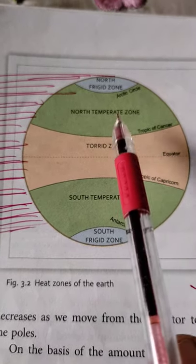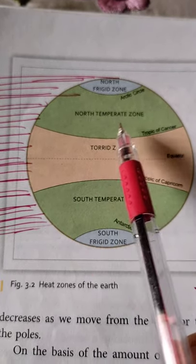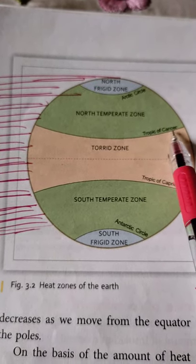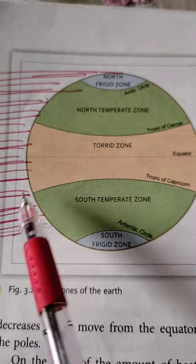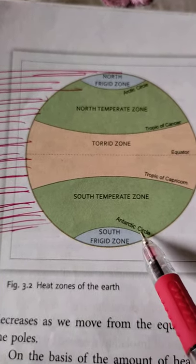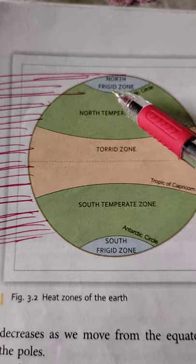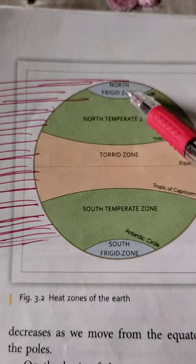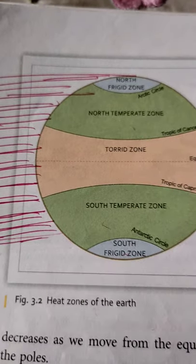Once we move towards the north or south, we are having the temperate zone — the south temperate zone and the north temperate zone. The line in the northern hemisphere is known as the Tropic of Cancer, and in the southern zone it is the Tropic of Capricorn. In the southern frigid zone we have the Antarctic Circle, and in the north we have the Arctic Circle.